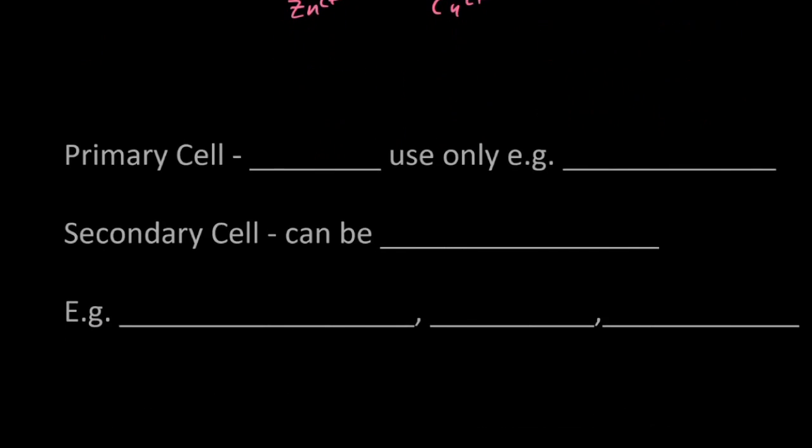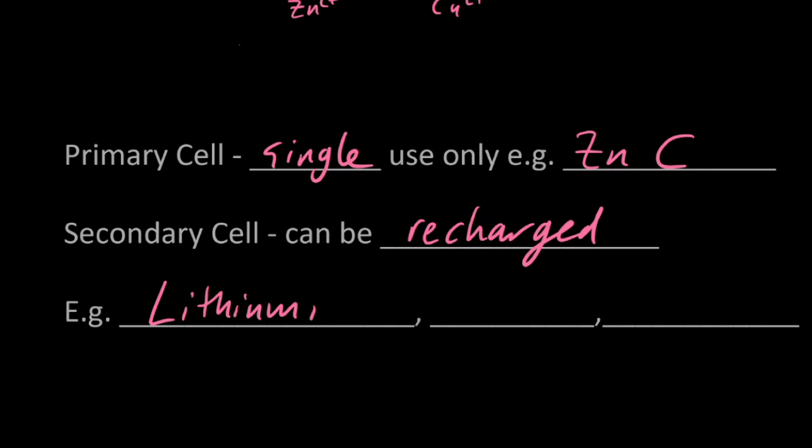Primary cells are single-use batteries, for example zinc-carbon. Secondary cells can be recharged, for example lithium-ion, lead-acid, or NiCad batteries.